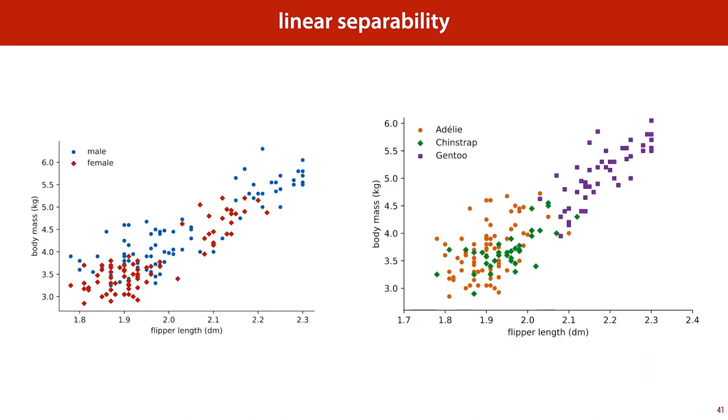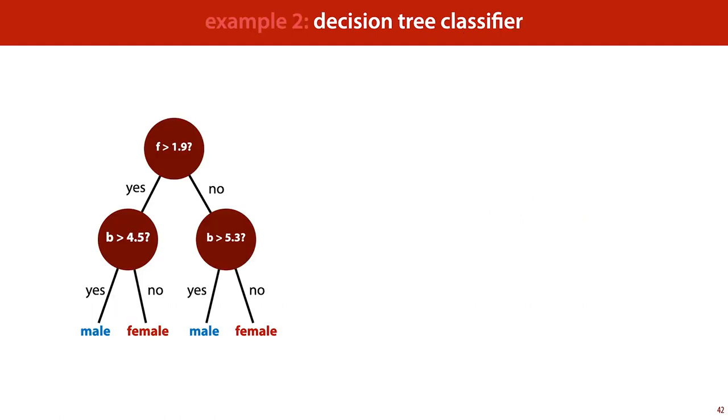The problem with this particular classification task is that it just isn't possible to separate the two classes very well with a single line. This is because we are actually looking at three different species of penguins plotted together. Within each species cluster, the classes can actually be separated much easier. But, if we cannot separate the data by species, we'll need to look into non-linear methods of classification. Here is one such approach. A decision tree.